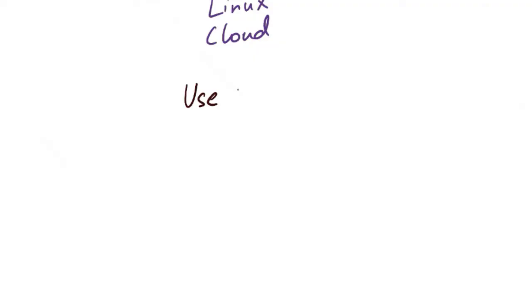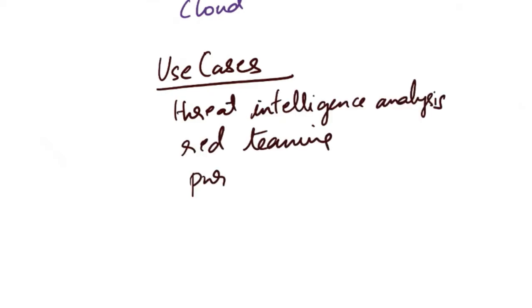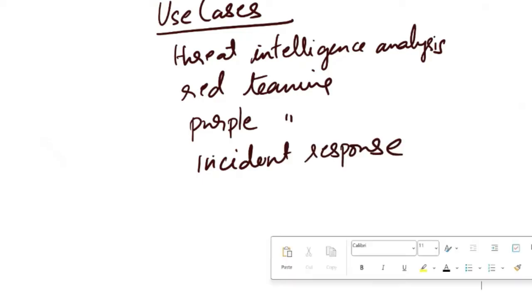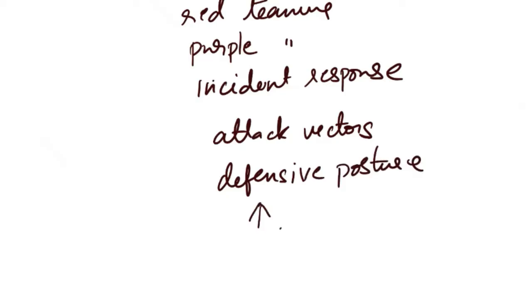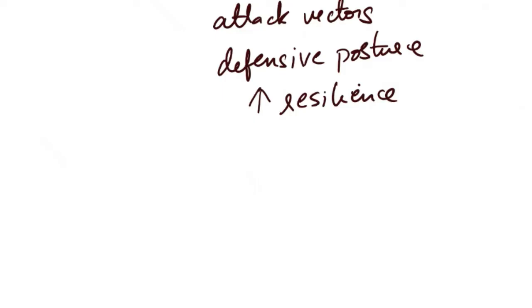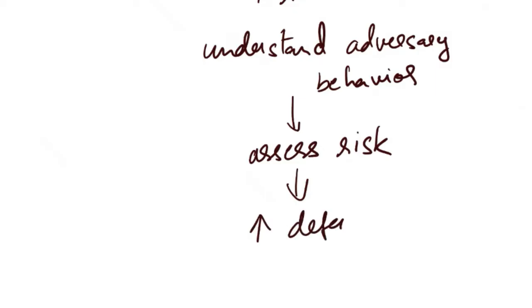Now let's look at why we need the MITRE ATT&CK framework — its use cases. It can be used for threat intelligence analysis, red teaming, purple teaming and incident response. It serves as a valuable resource for organizations to understand potential attack vectors, evaluate their defensive posture and improve resilience against cyber attacks. It provides a common language and taxonomy for describing cyber threats, facilitating collaboration, information sharing and collective defense within the cyber security community.